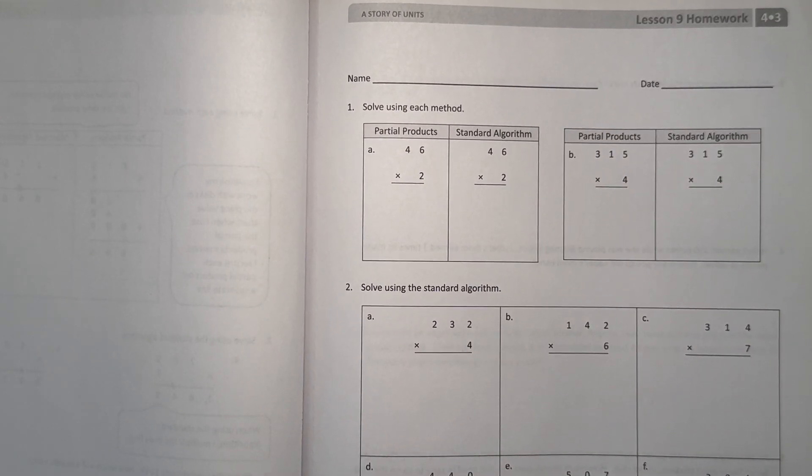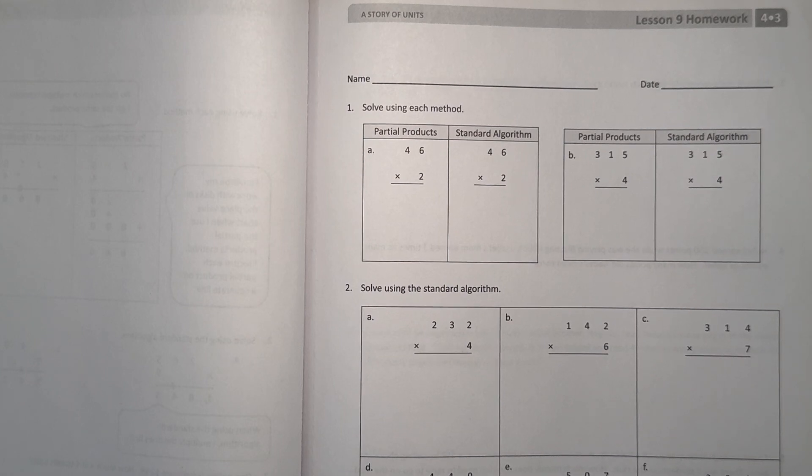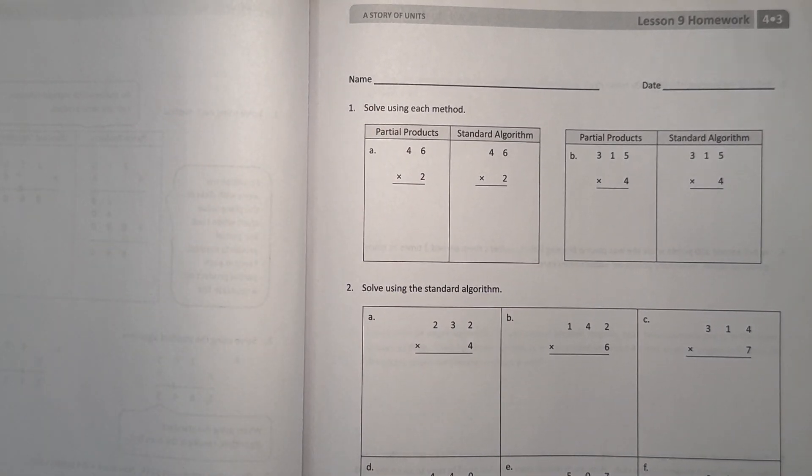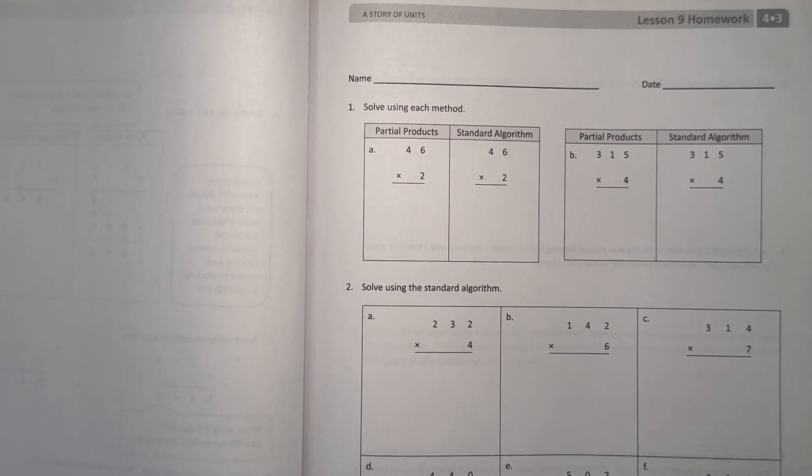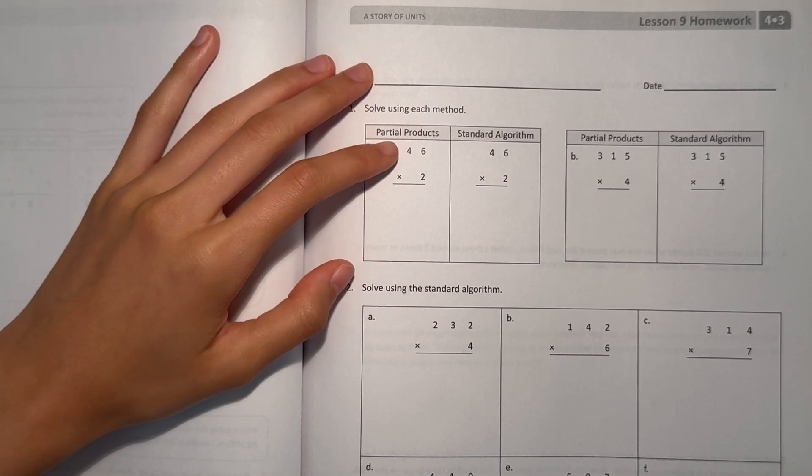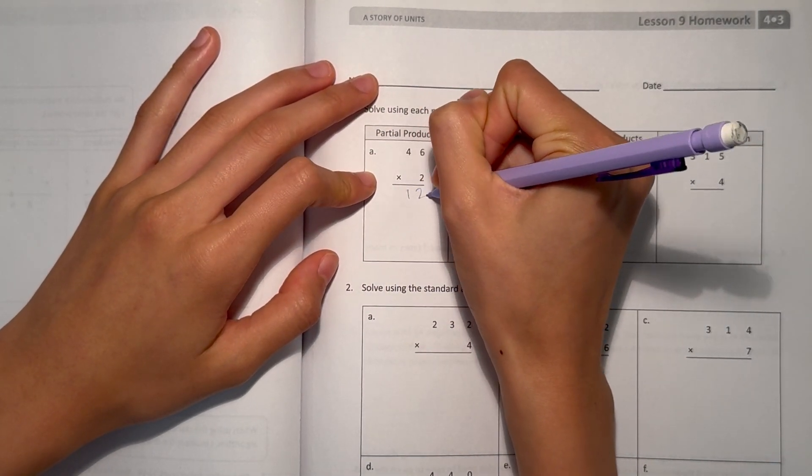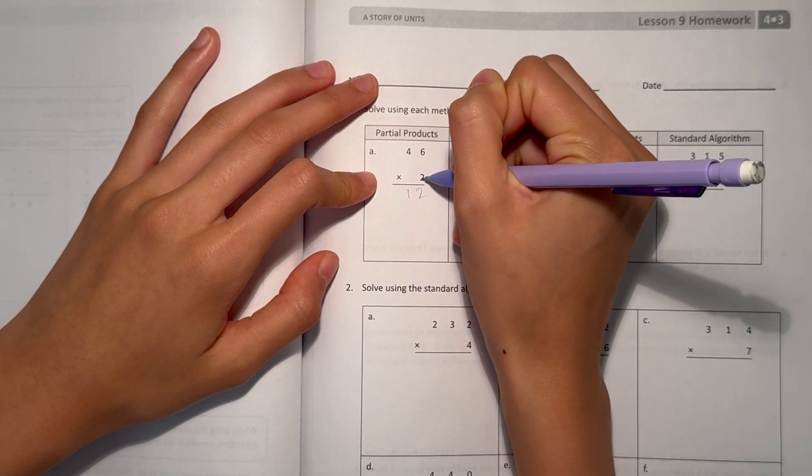Number 1, solve using each method. So we have 46 times 2, partial products way. Partial products is when we basically do it as if we're doing place value disks. So 46 times 2, 2 times 6 is 12, and 2 times 4, or 2 times 40.